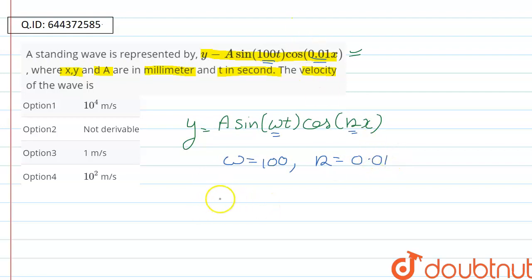Now we know that the speed of the wave is v equals omega over k, that is angular frequency over angular wave number. Now we have the values for both and putting them we will be getting 100 upon 0.01. So this will be giving us 10 raised to power 4 meter per second. So option one is the correct option. Thank you for watching.